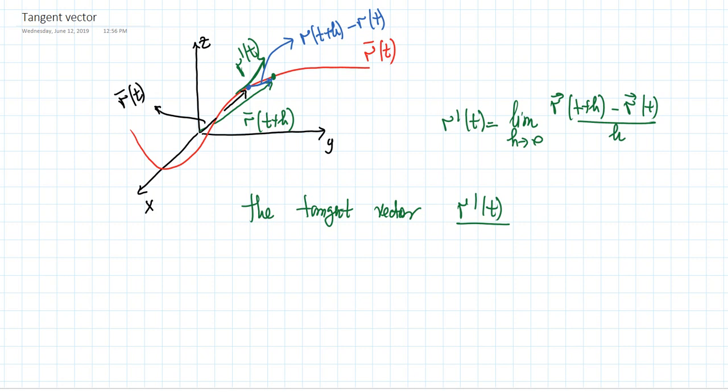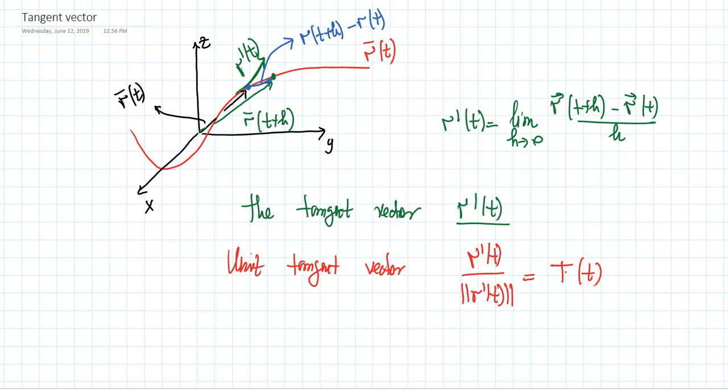In order to make our work easier, we are going to normalize the tangent vectors. We are interested in unit tangent vectors. No matter where we find the tangent vectors, we scale them up to unit vectors. We do this by dividing the vector by its own length. So the unit tangent vector is defined as R prime of t divided by the norm of R prime of t, and this is denoted as T of t.